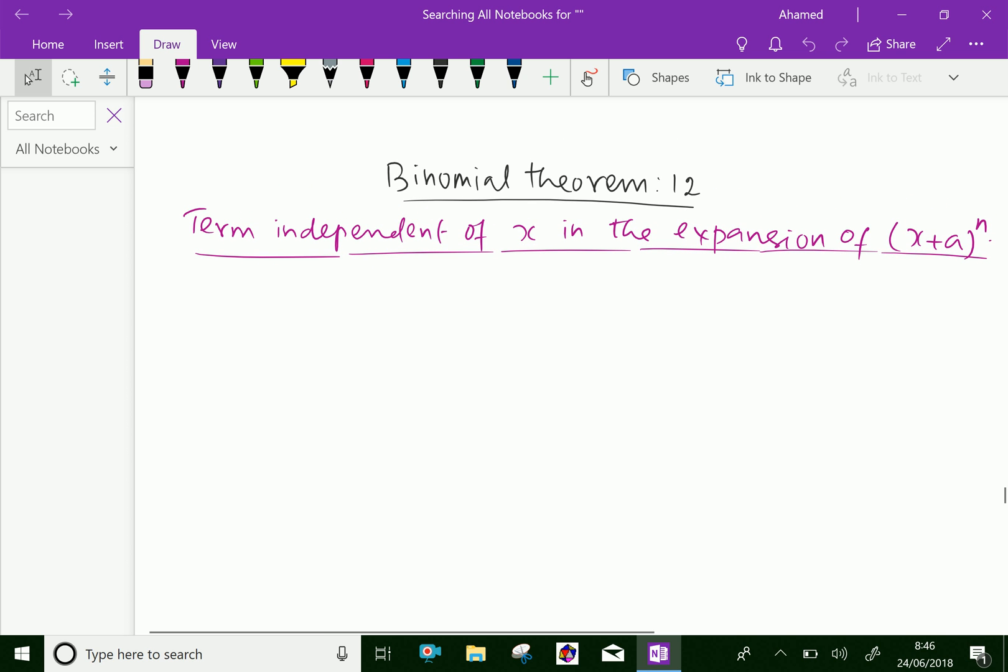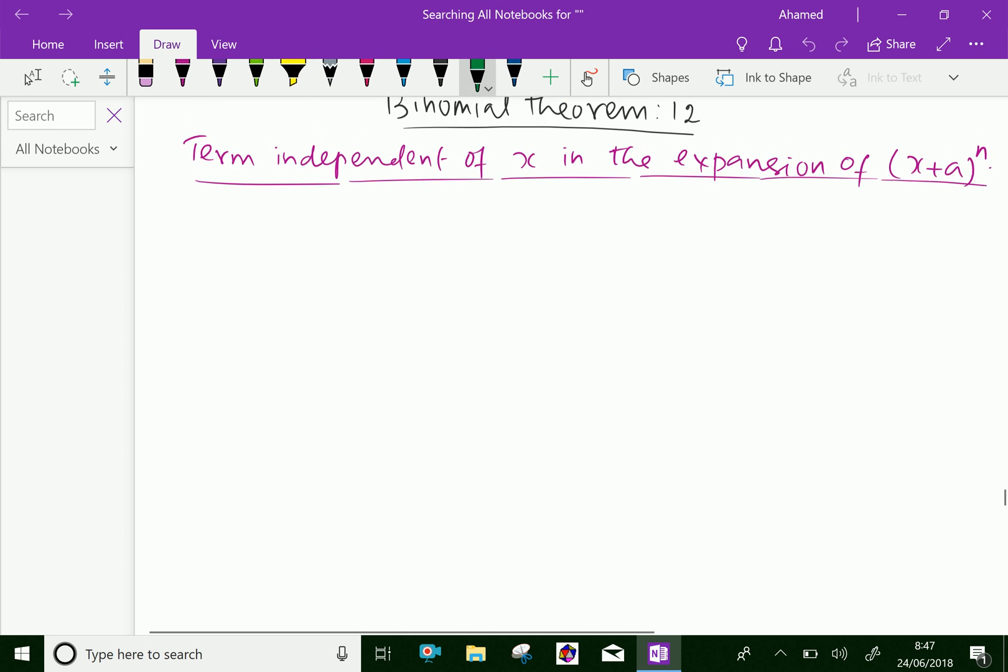Now, if we expand (x + a)^n for some values of x and a, there will be independent terms, independent of x in the expansion. We can get it like this: let T_(r+1) be the term independent of x.